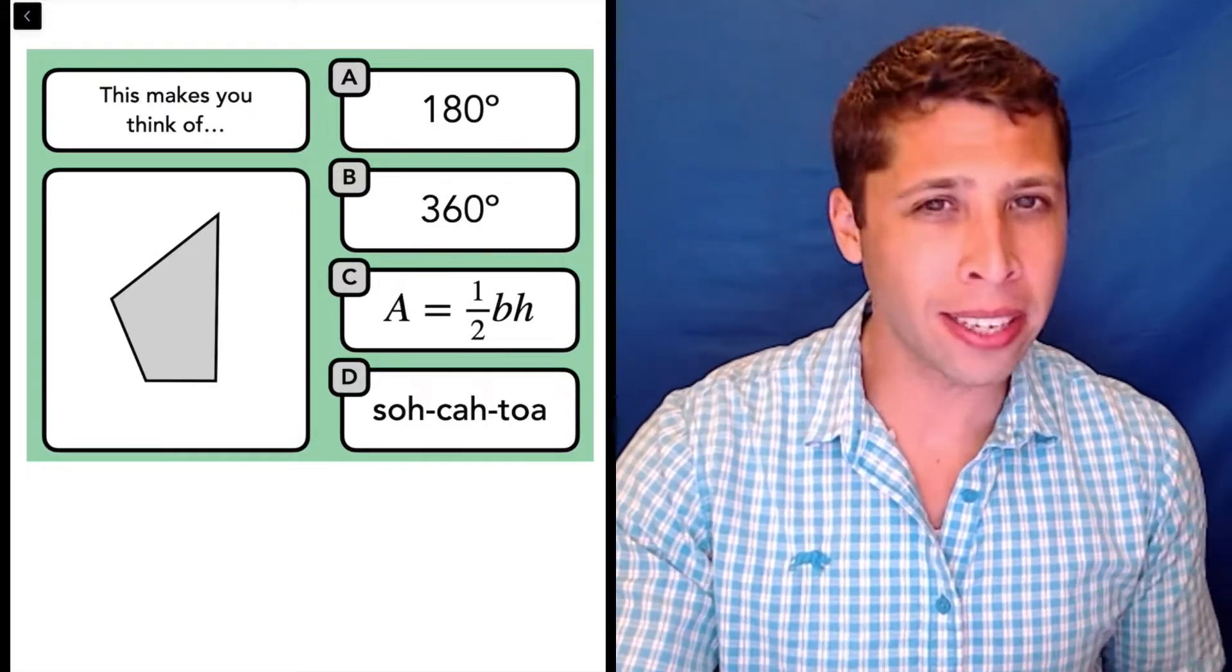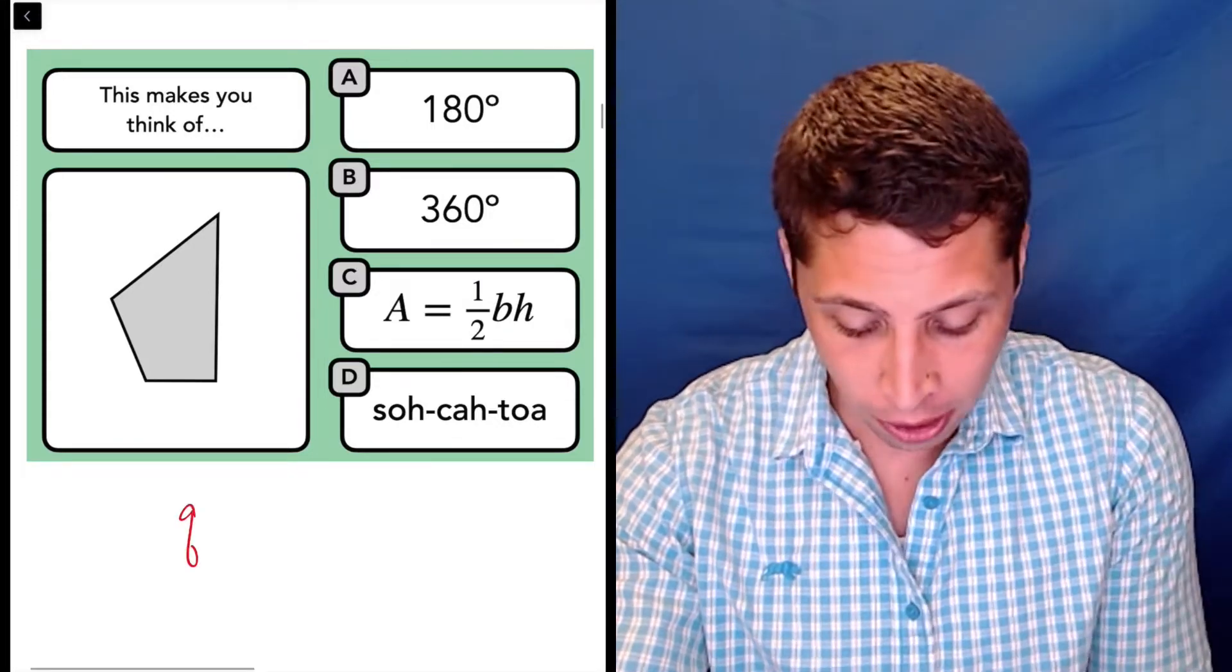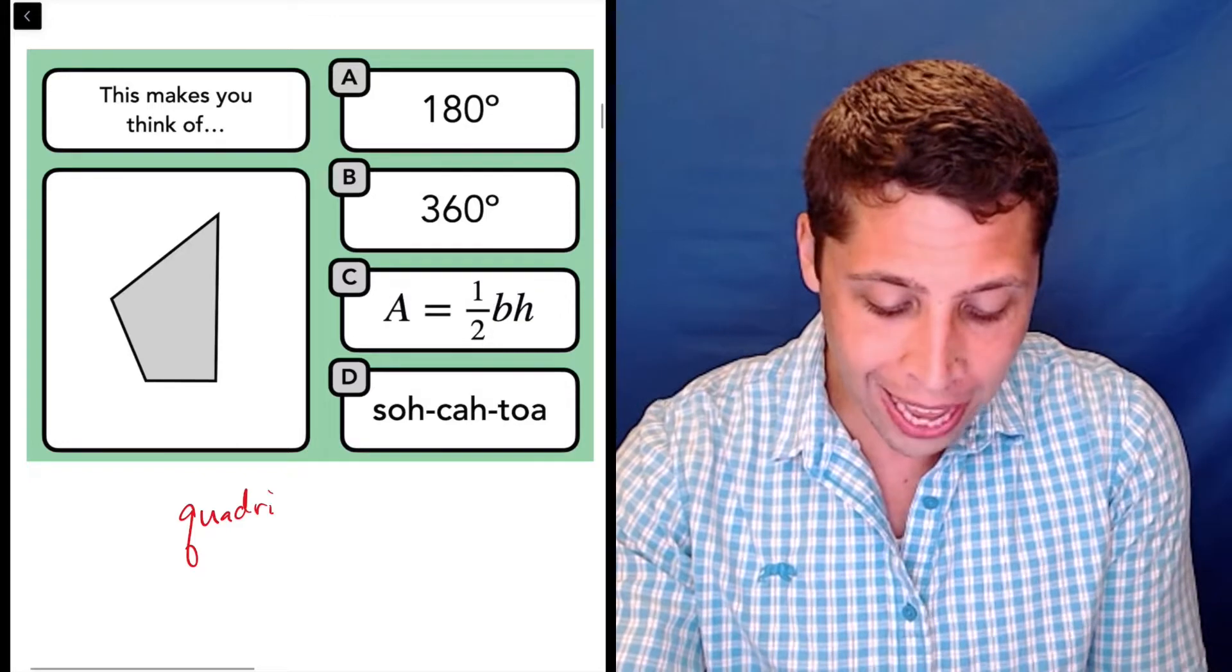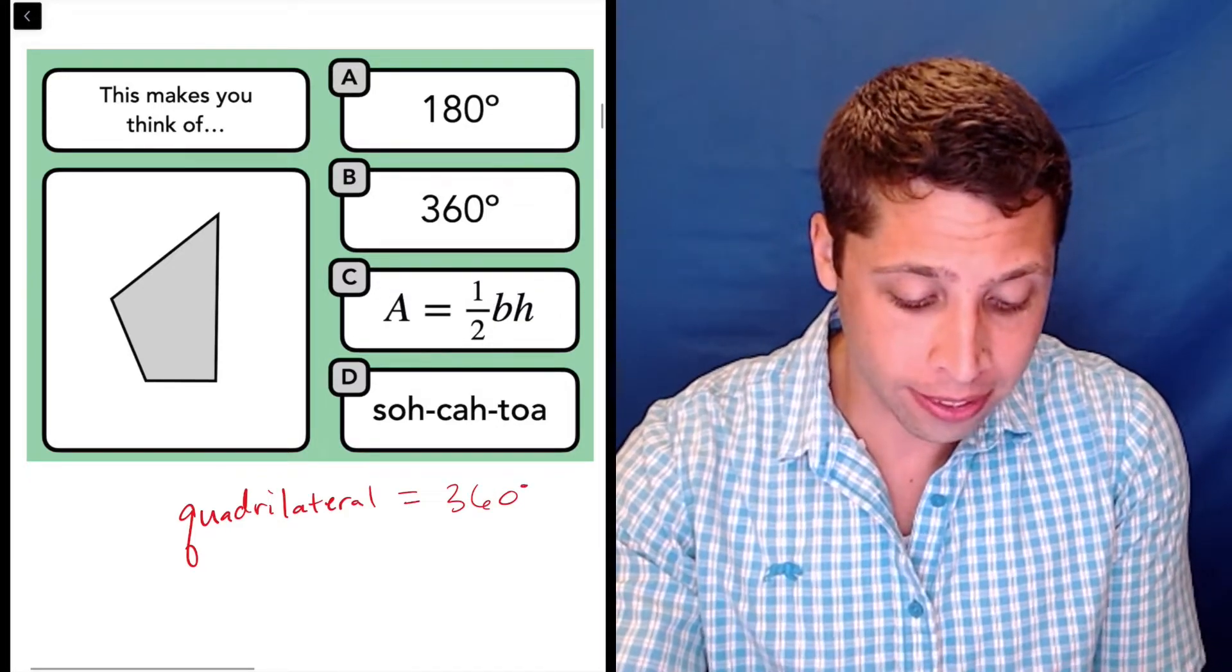For whatever reason, they stop short and they forget to tell you that a four-sided figure, a quadrilateral, has 360 degrees.